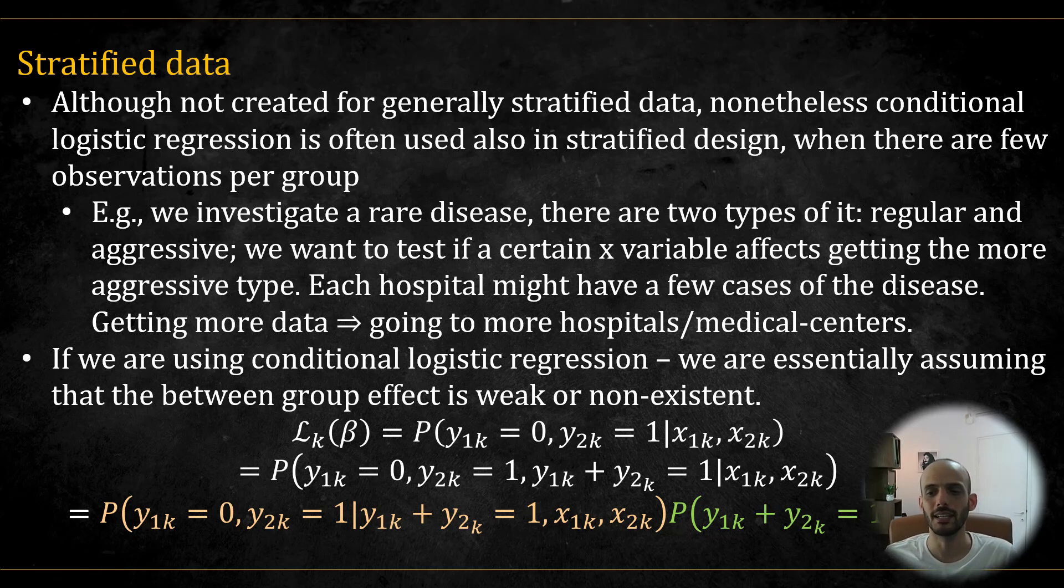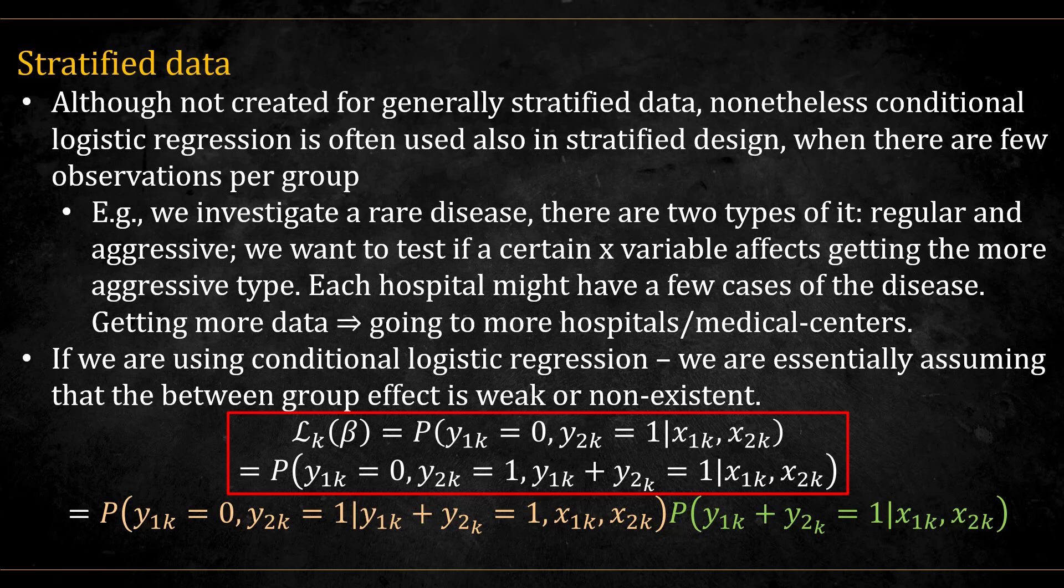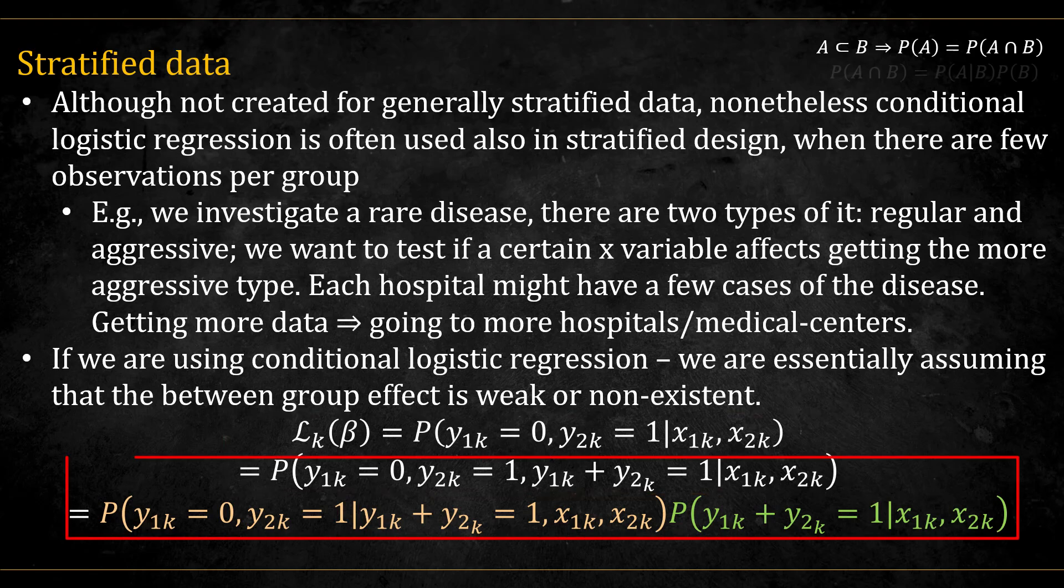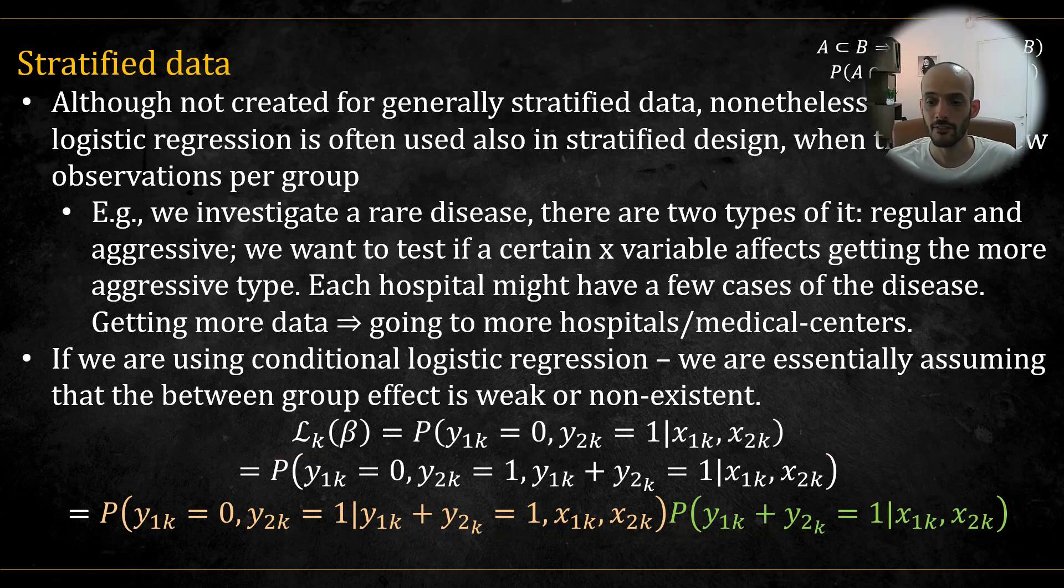When we use conditional logistic regression in such setting, we are essentially assuming that the between group effect is weak or negligible or non-existent. We can see this reflected in the likelihood structure. In the stratified case, we know that the observation came from the same kth group, but we don't know their sum. We can include the group total as part of the observed event, since it is determined by the individual outcomes and adds no new information. But if we condition on it, we get the following. Conditional logistic regression focuses only on the left part and essentially captures the within group effect. It completely ignores the right part, which would account for the between group effect.